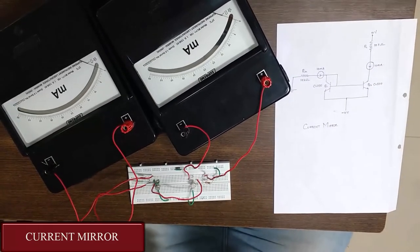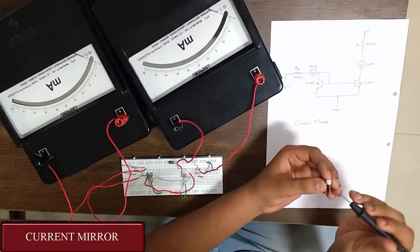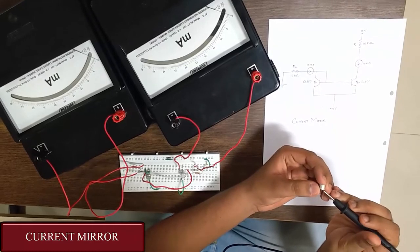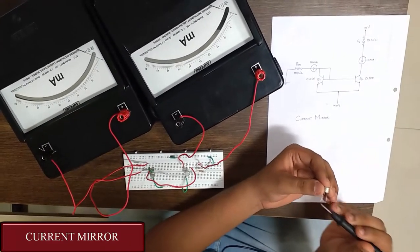We have two BJTs. The BJT used is CL100. The closest pin to the notch is emitter, then base, and then the collector.